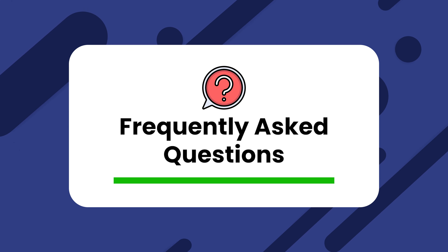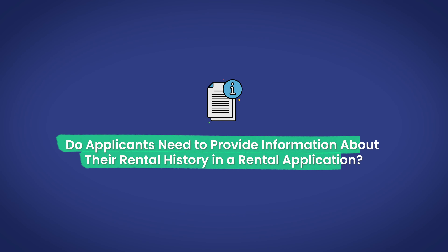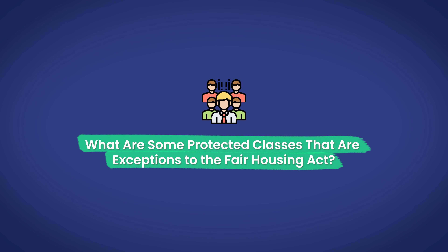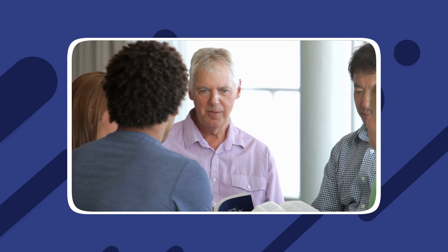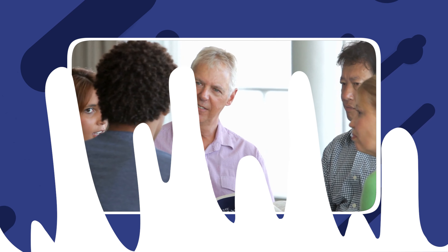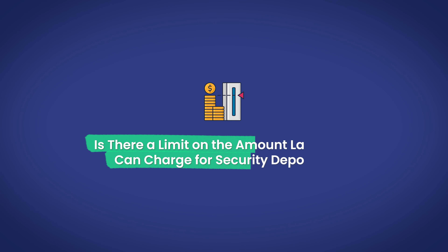Let's address some frequently asked questions. Number one: do applicants need to provide information about their rental history? Yes, applicants should provide rental history. Number two: what are some protected classes that are exceptions to the Fair Housing Act? Certain age-restricted facilities, private clubs, and religious organizations are exempt, which means you can request this information in a lease application. Number three: is there a limit on the amount landlords can charge for security deposits? Yes, security deposits are capped at one month's rent.